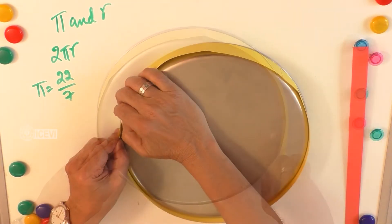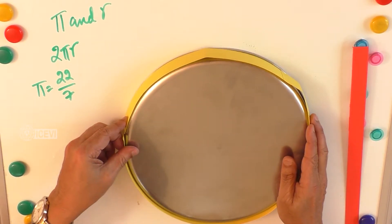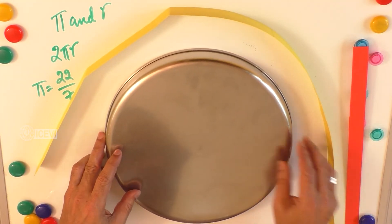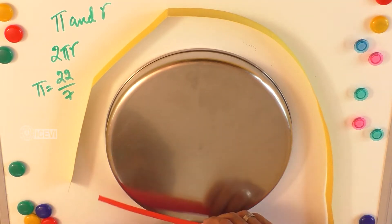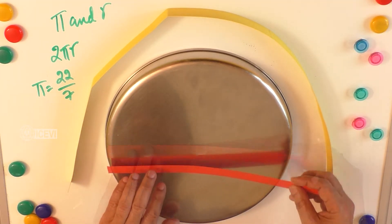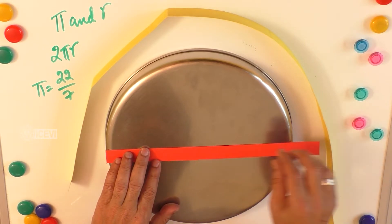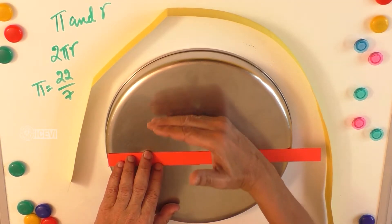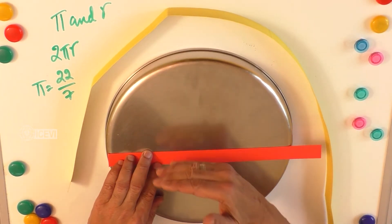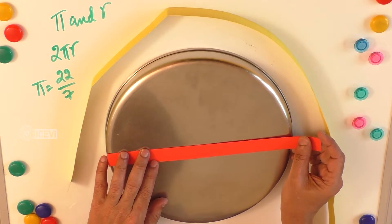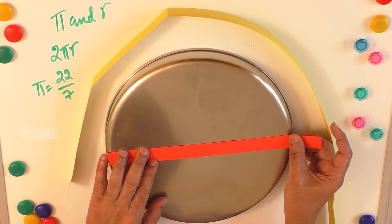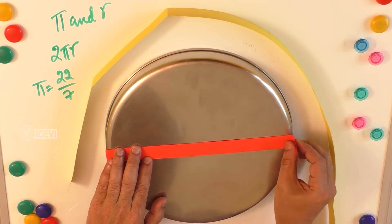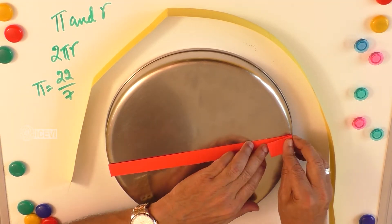We have used this paper strip to find out the exact circumference of the plate. Now we need to find the radius or diameter. For a plate like this, it is easier to find the diameter than the radius, because it is very difficult to find the center. We approximate the upper and lower halves and try to find the diameter of the plate.